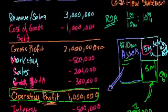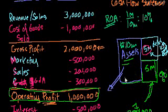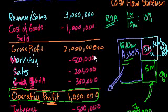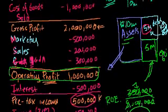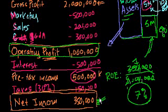At this point you should have a good understanding of at least a basic income statement for a company that sells widgets. In the future we're going to look at financial companies, insurance companies, natural gas pipeline companies that will have very different looking income statements. But this gives you the general template for how things work, and at least a sense of how revenues, gross profit, operating profit, pre-tax income, and net income are really different — even though in the popular press they're often jumbled together as just the company making this much money.